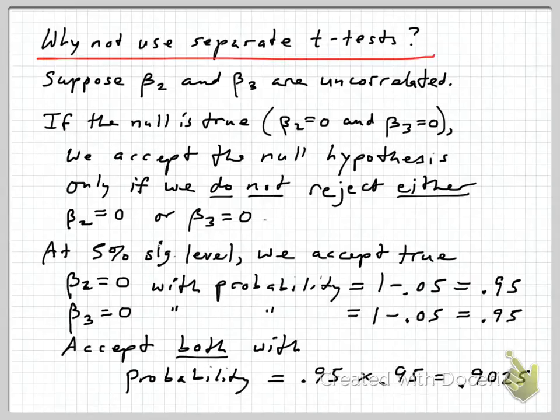Why not use separate t-tests? Let's start by the assumption, usually not true, that the β₂ and β₃ estimates are uncorrelated. As you look at random samples drawn from a population, the slope coefficients are random variables themselves. They vary from one sample to another. For the moment, let's suppose they are uncorrelated.